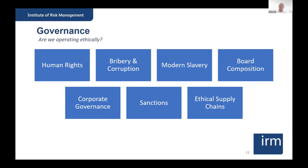Board composition: this is a tricky one in the region, particularly when there are many family organizations where families typically sit on the boards. But could that be seen as the wrong governance practice, not as ethical as we'd like? Do we have appropriate diversification on the board — the right skill sets, backgrounds, and nationalities? The full spectrum needs to be considered. Corporate governance: do we have sufficient policies and procedures covering all our activities? Do we have appropriate structures? Are the boards meeting regularly to provide sufficient oversight to detect and respond to potential mishaps?